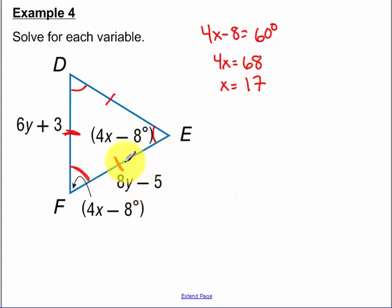Now since all of your sides are equal, 6Y plus 3 is equal to 8Y minus 5. Add the 6Y over, add the 5 over, and we get Y equal to 4.